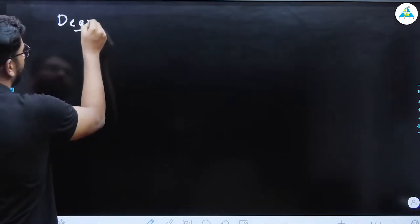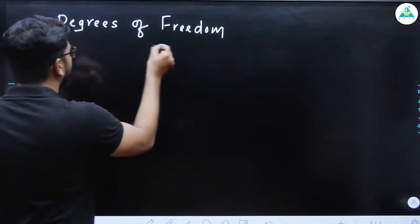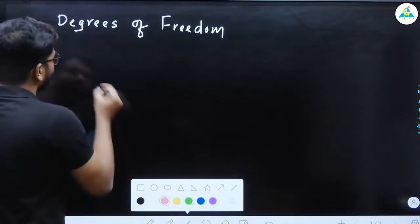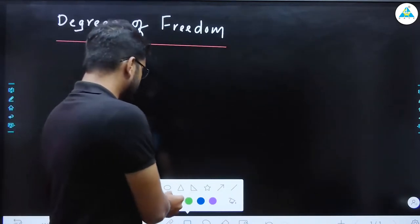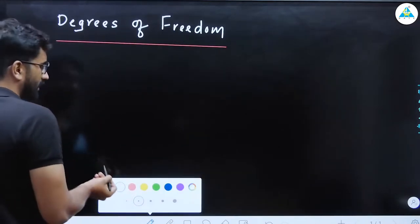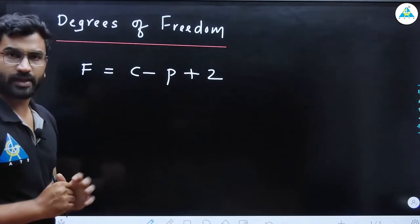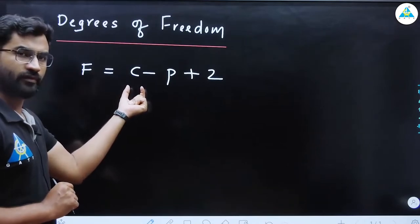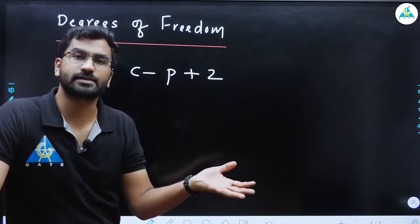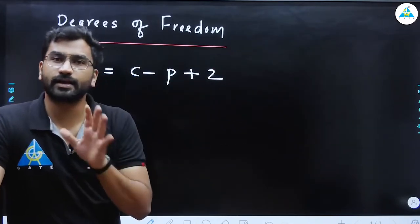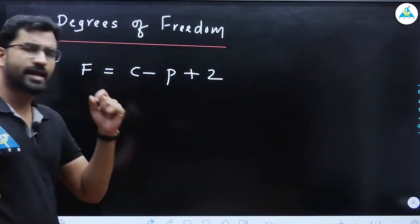This is part of the Chemophilia series where we take one topic per lecture and solve problems on that basis. For solving problems, you need the equations. The general equation for degrees of freedom for a non-reacting system is F = C - P + 2, where C is number of components, P is number of phases.